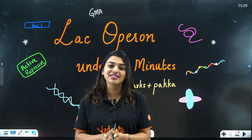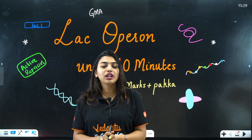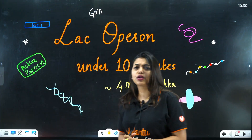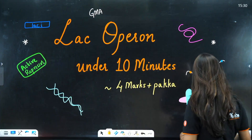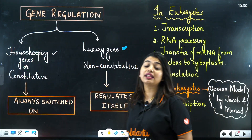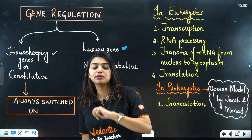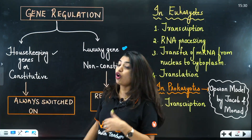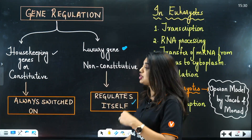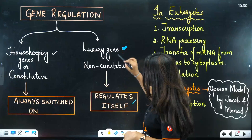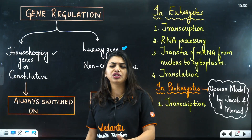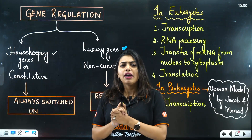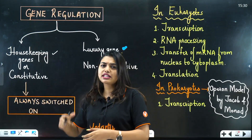I'm Miss Gopika, your biology master teacher, and today we are going to learn the lac operon concept. Before I go into the concept, you have to understand that there are two types of genes. The first is called the housekeeping gene or constitutive gene, and the second is called the luxury gene, non-constitutive gene, or regulated gene.